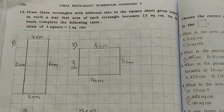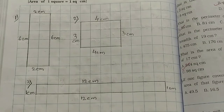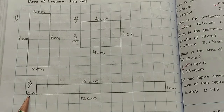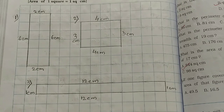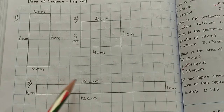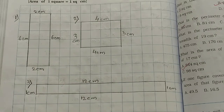Now see the third one. Here I took a length of 1 centimeter and a breadth of 12 centimeters. We have to draw each rectangle with a different measurement, a different size. But the area will come to only 12 square centimeters. So area equals length multiplied by breadth: 1 multiplied by 12 equals 12 square centimeters.